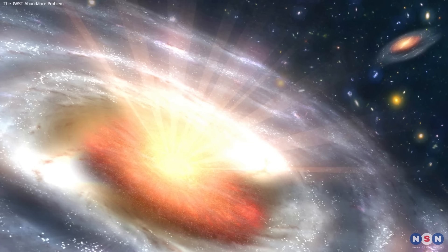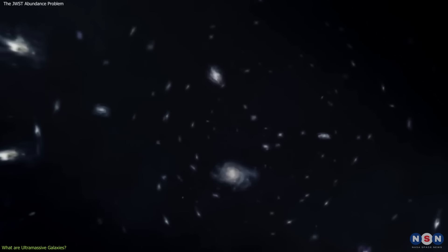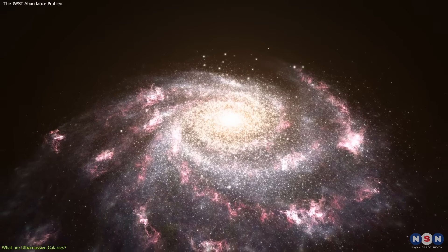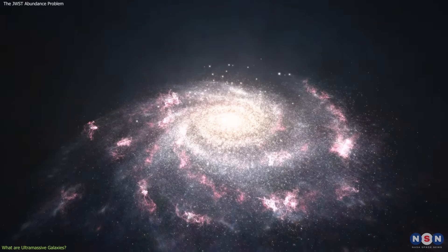The first section of the video is about what are ultramassive galaxies, and why they are surprising to find in the early universe. The term ultramassive galaxy refers to a galaxy that has a stellar mass of more than 10 to the power of 11 solar masses.